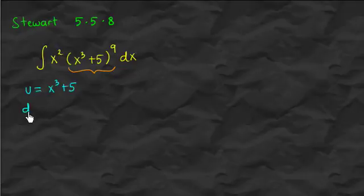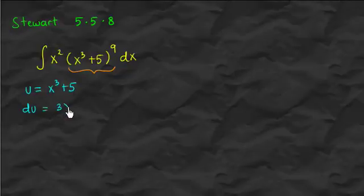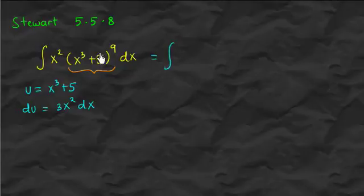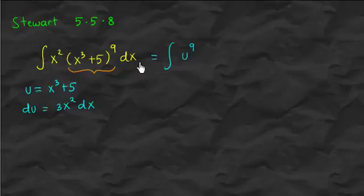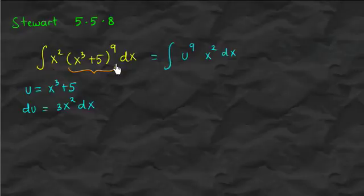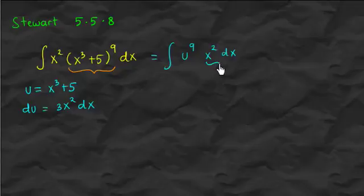Now take the differential, which is roughly similar to taking the derivative. The derivative of x cubed plus 5 is 3x squared dx. Now the idea is we replace the inside by u, and then we have x squared dx left. x squared is from this expression and we also have dx. But we want our integral to be expressed completely in terms of u, so we need to somehow make this x squared dx in terms of u.